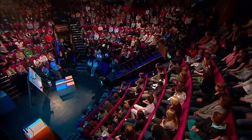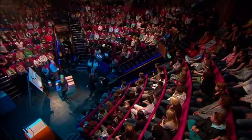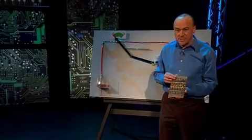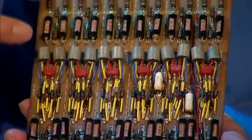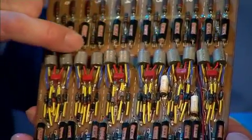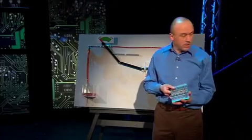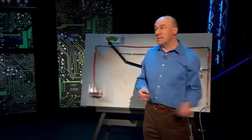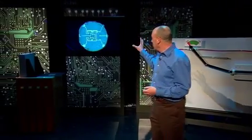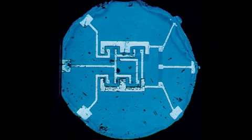Now at first transistors were packaged individually and I have here a circuit board from a computer was built in the early 1960s and you can see each of these silver cans is one separate transistor. Now the next important development was called the integrated circuit and here we can see an example of an early integrated circuit in which four transistors have been manufactured on the same piece of silicon.